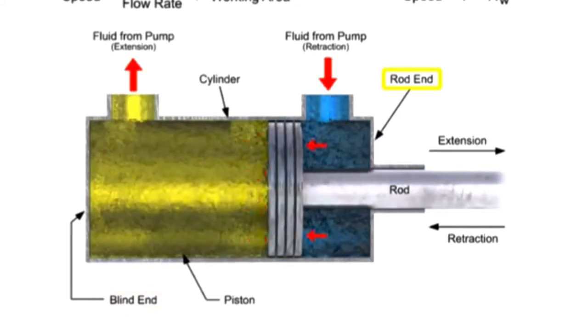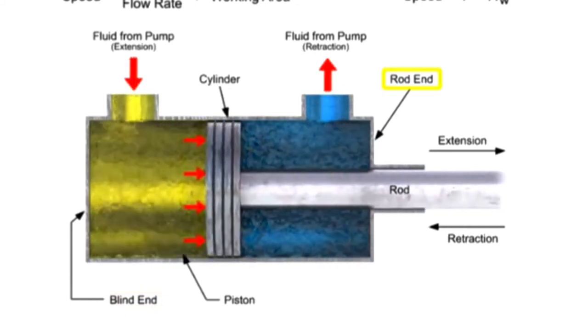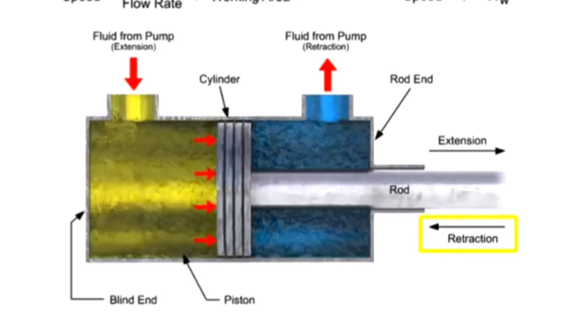Since the rod end side fills more quickly, this type of cylinder will always retract faster than it can extend.